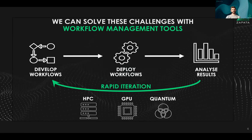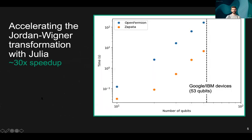One of the things that Orchestra makes it very easy to do is to be able to swap out different components of your algorithm, different steps in your workflow. As an example of that, I'm going to talk about a high-performance implementation of the Jordan-Wigner transformation that we've developed.